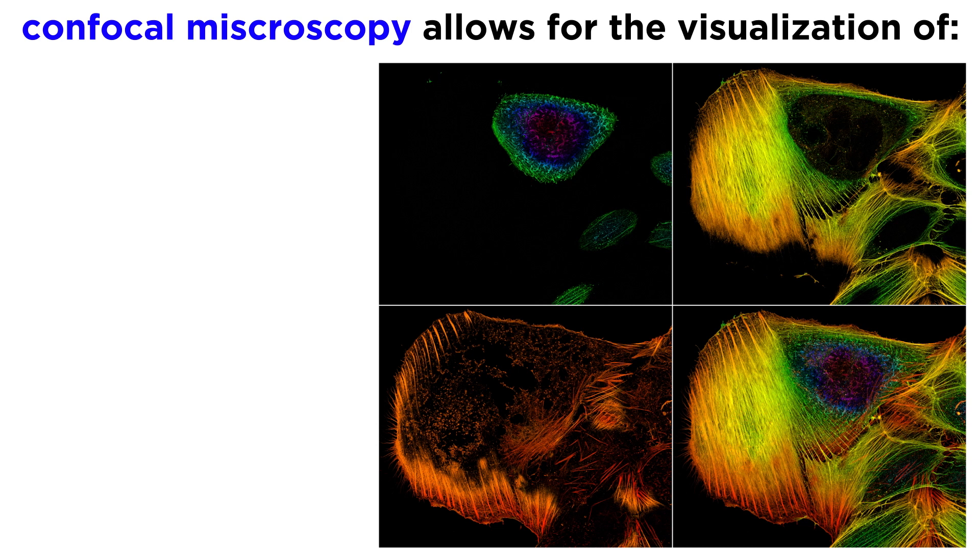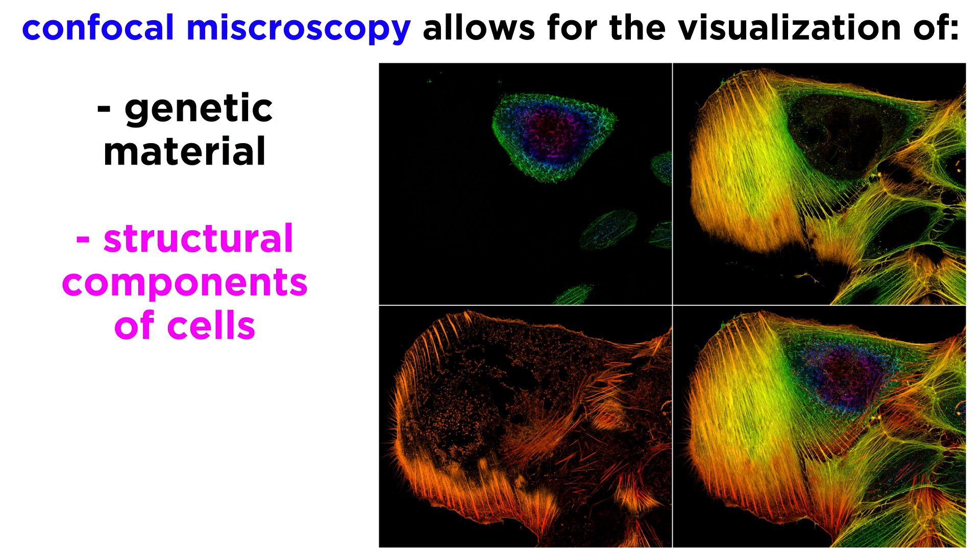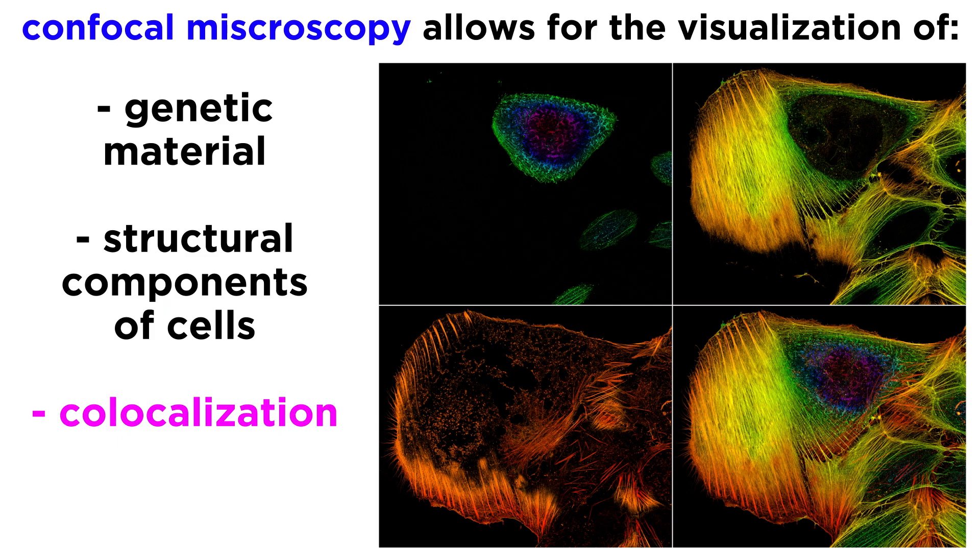Confocal microscopy can be used to visualize genetic material, structural components of cells, assess the colocalization of structures, and study the viability of cells. Although confocal microscopes do not have as high a resolution as electron microscopes, unlike electron microscopes, they are able to identify and distinguish between structures within a specimen.